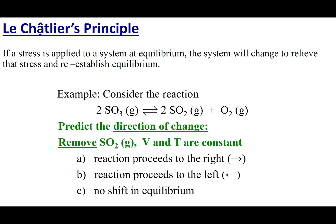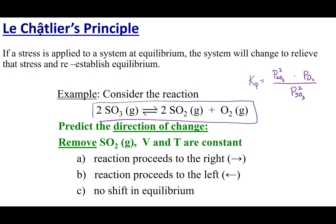Let's think about this equation. The first thing I want to do is write an equilibrium expression. I'm going to go with Kp. Kp is going to equal the pressure of my products raised to their stoichiometric coefficients divided by the pressure of the reactants raised to their stoichiometric coefficients.